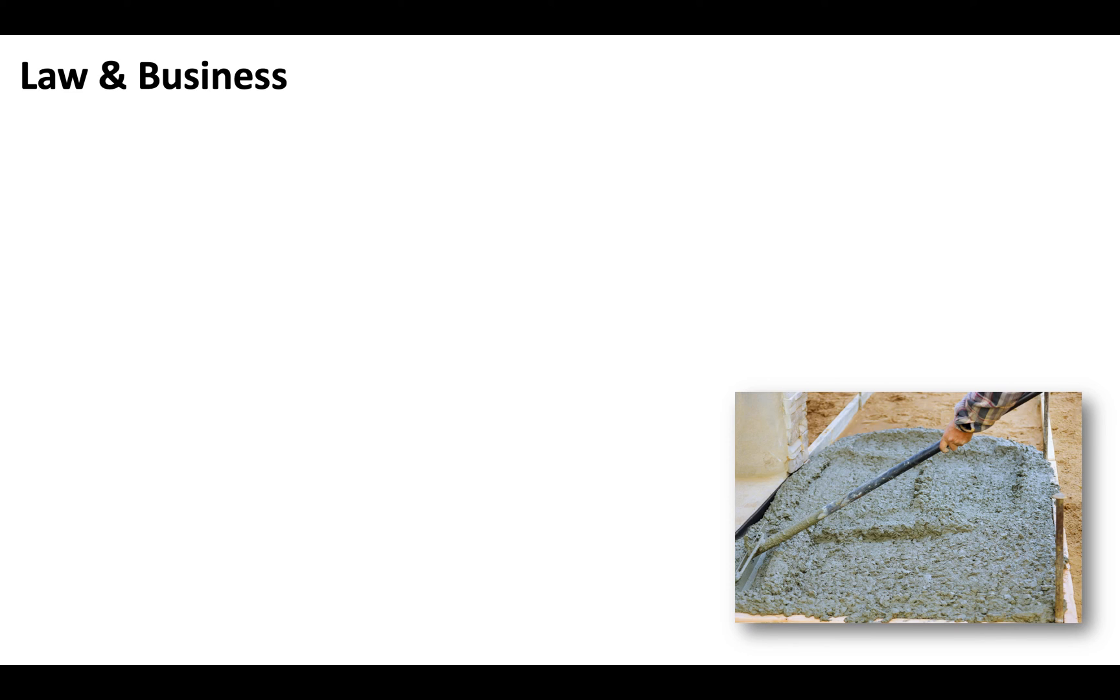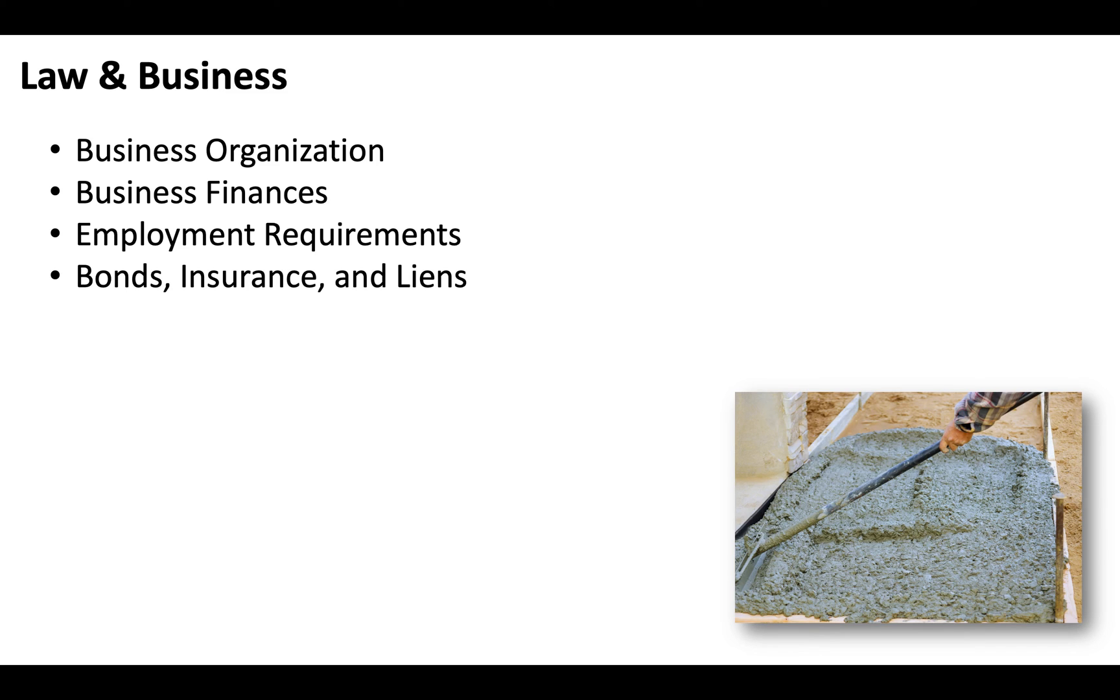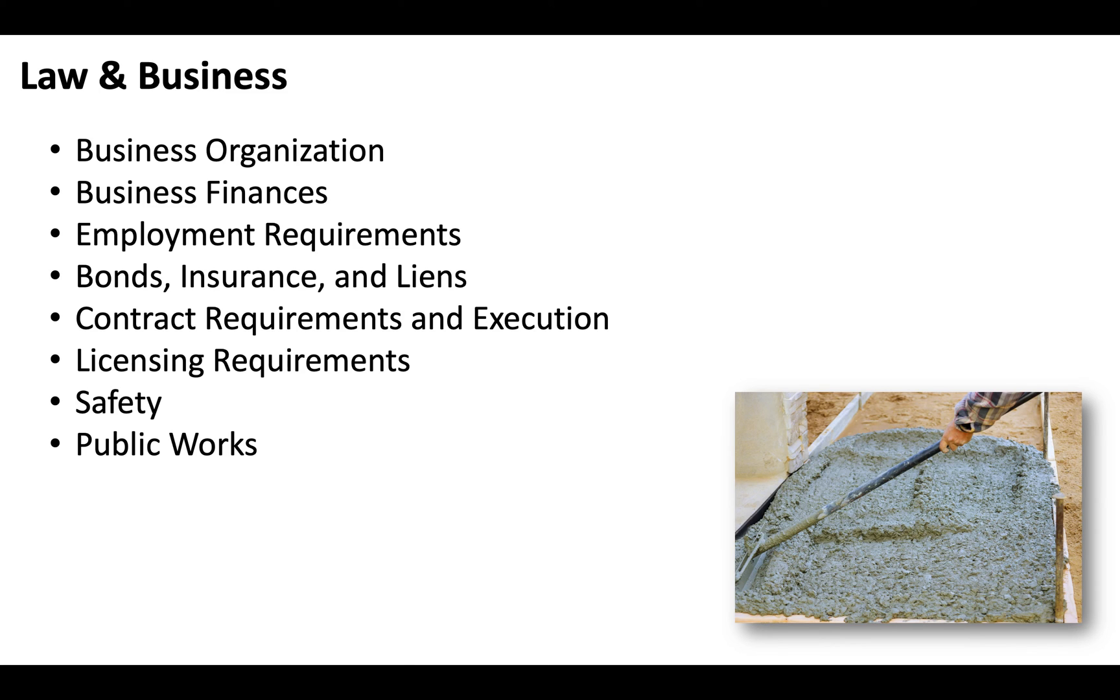As is the case with all California contractor license C classifications, you'll also have to pass the CSLB law and business exam. That'll include sections on business organization, business finances, employment requirements, bonds, insurance, liens, contract requirements and execution, licensing requirements, safety, and there'll be a portion on public works.